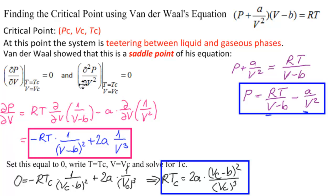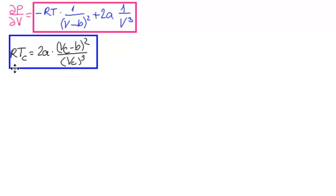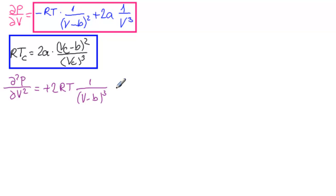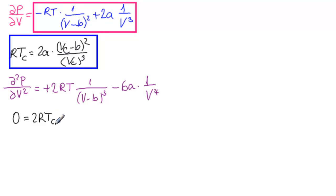Now we find the second partial, taking the partial derivative of the first partial with respect to V and setting it equal to zero. The second partial ∂²P/∂V² equals positive 2RT over (V minus B) cubed minus 6A over V to the fourth. Setting this equal to zero with TC and VC gives: 0 equals 2RTC over (VC minus B) cubed minus 6A over VC to the fourth.